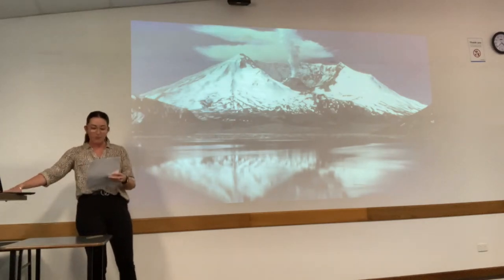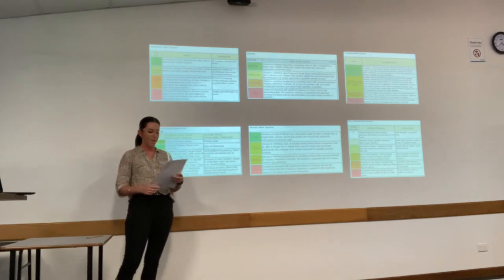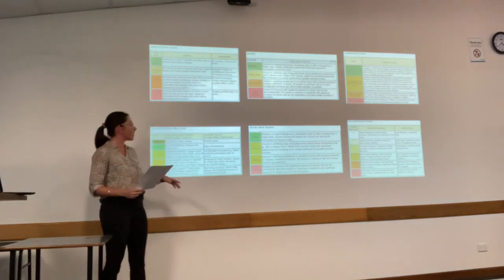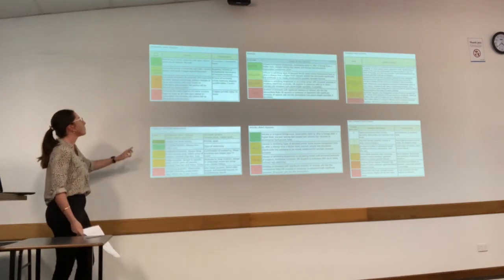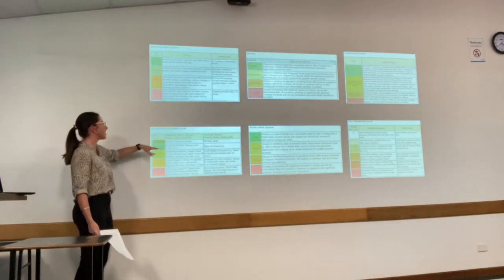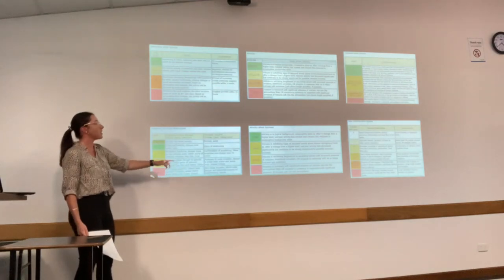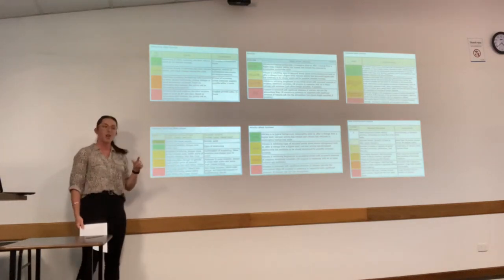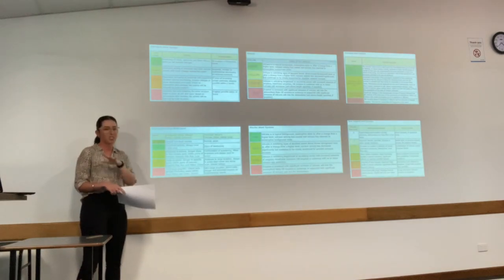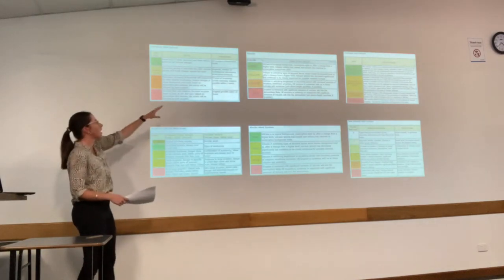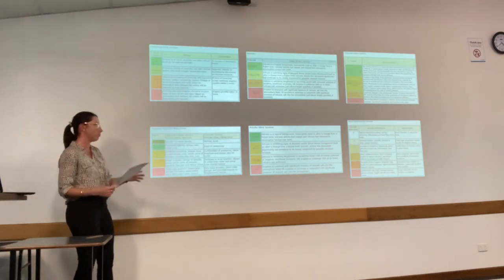Countries with active volcanoes such as Indonesia, New Zealand, Russia, Alaska, Vanuatu, and Colombia all have their own warning alert level systems. Each of them has a colour coordination and description of the volcanoes, and each of them is different because each volcano is different, each country is different, the climate, everything. They've each got their own different descriptions and colour coordination systems.